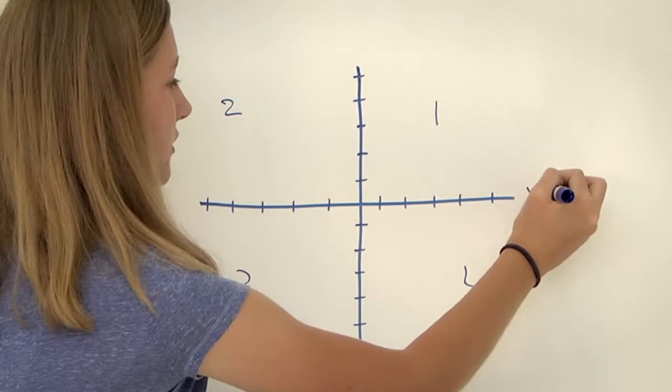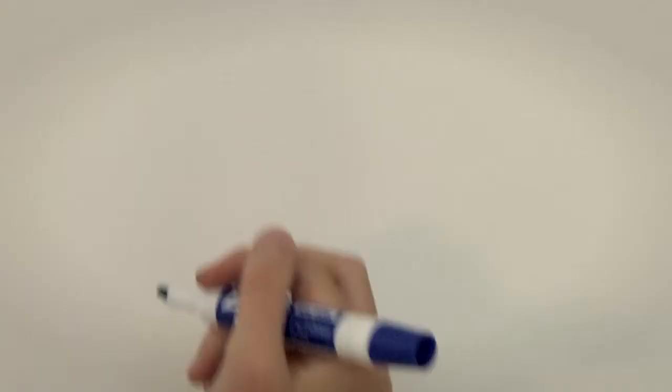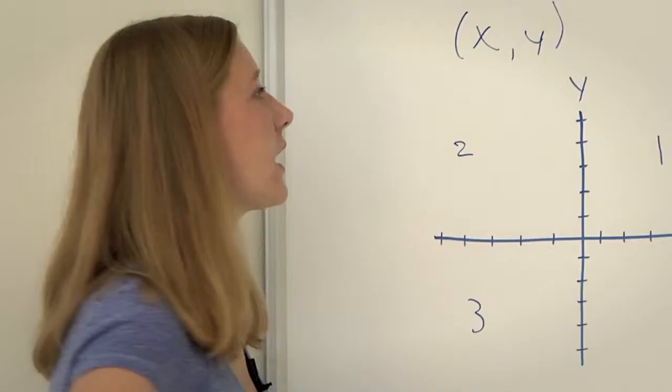It also has two axes, which are the lines that run horizontally and vertically across the graph. The x-axis runs horizontally and the y-axis runs vertically. A coordinate point is denoted in parentheses.